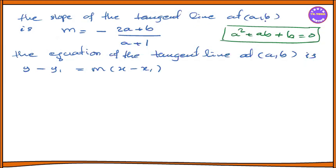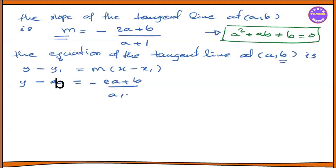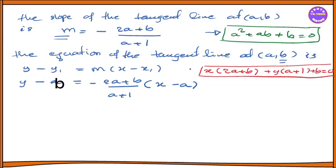The slope of the tangent line at point (a, b) — once you have the slope m, the equation of the tangent line at (a, b) is: y minus y1 equal to m, which is minus (2a plus b) divided by (a plus 1), into x minus x1.